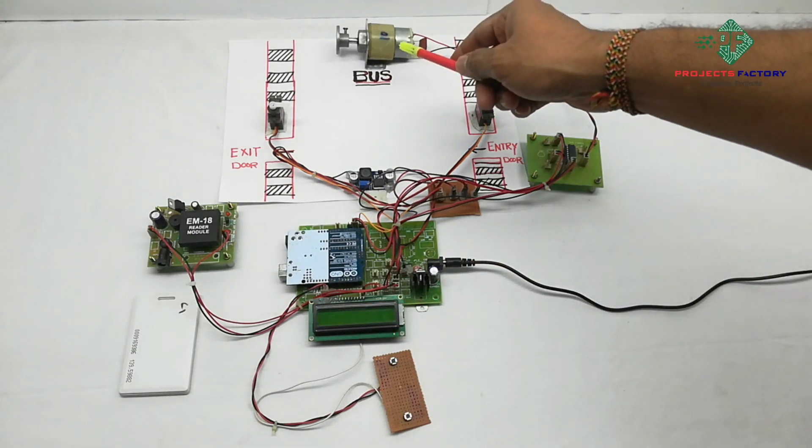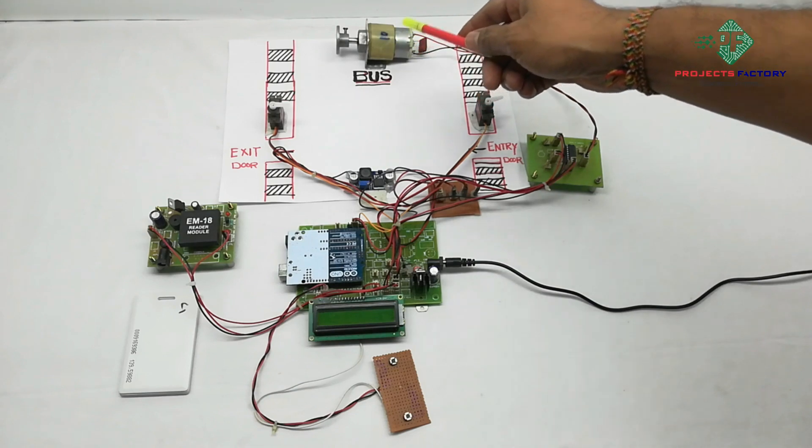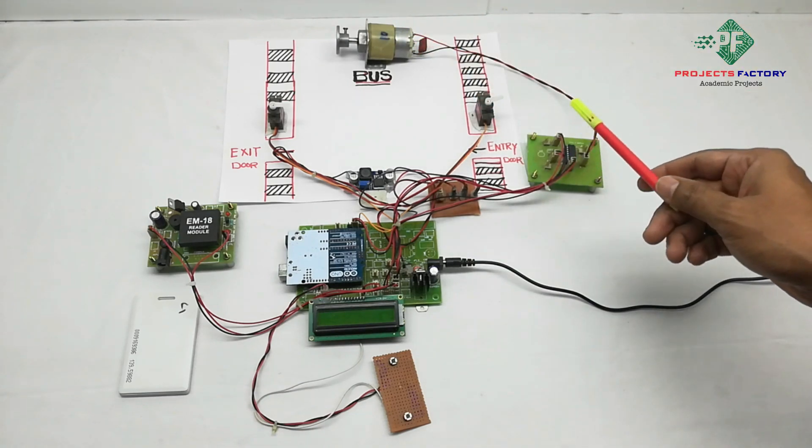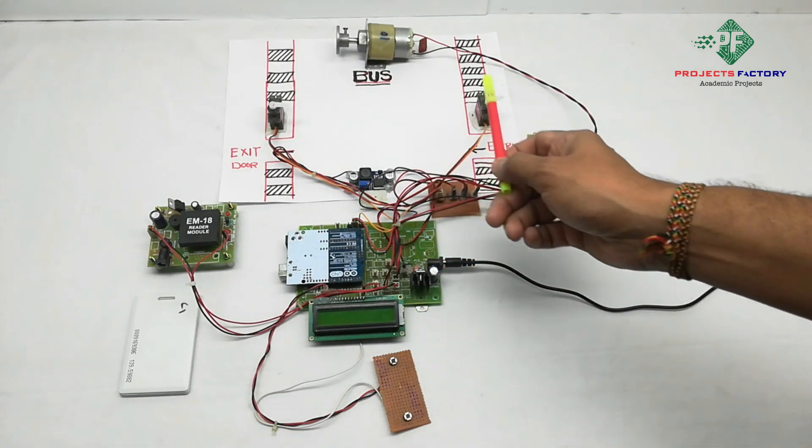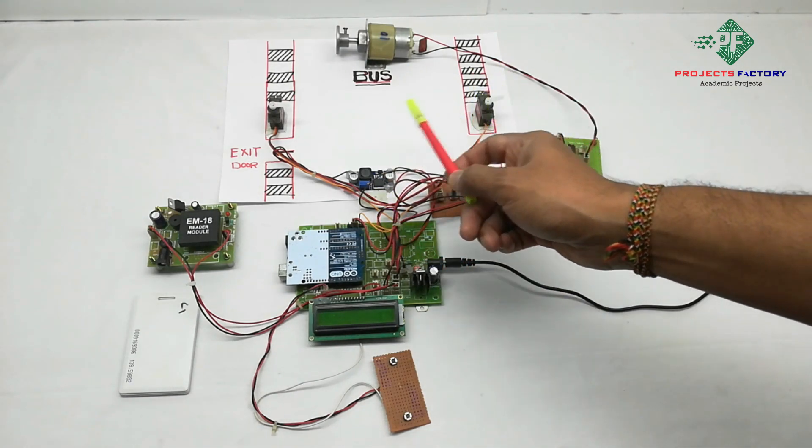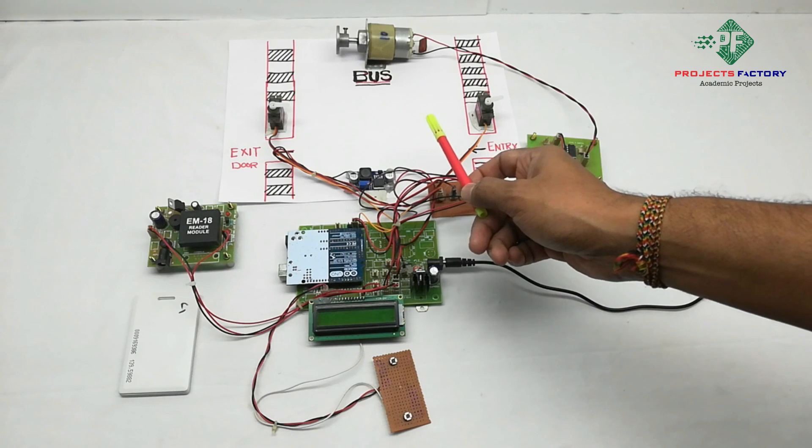DC gear motor represents the bus, controlled by L293D H-bridge IC which is connected to Arduino digital pins. These two servo motors represent the bus exit and entry doors.